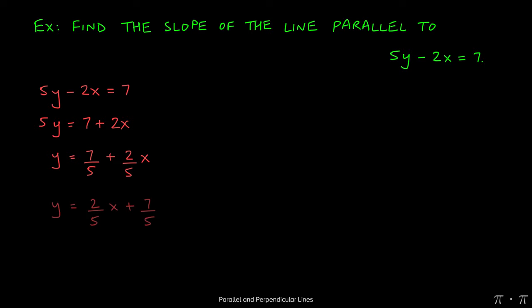We can rearrange the term so that it looks familiar to us. 2 fifths x can be written first, and then the 7 fifths can be written second.